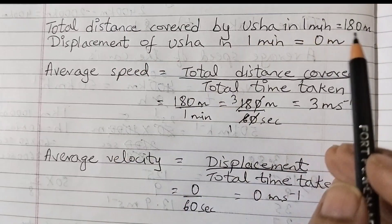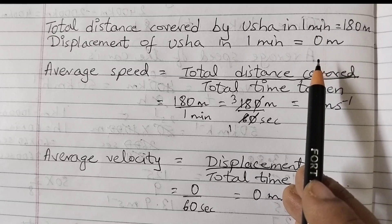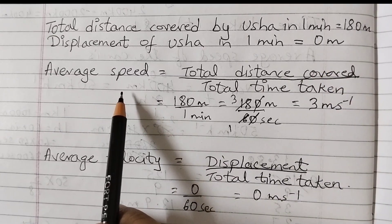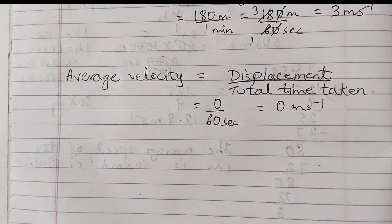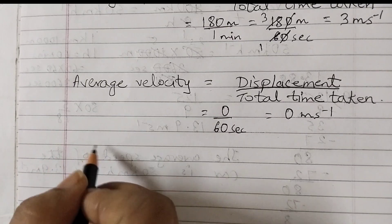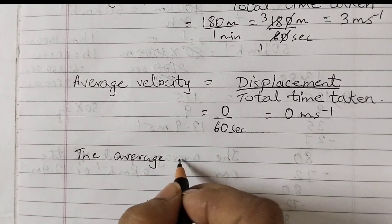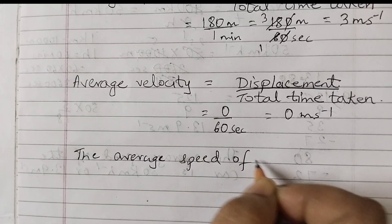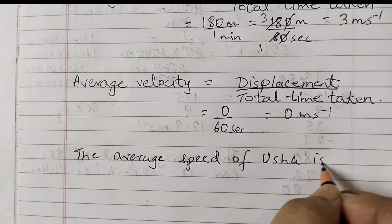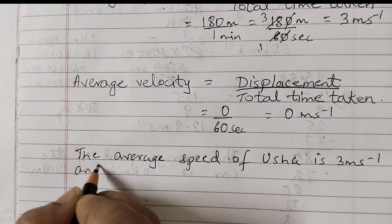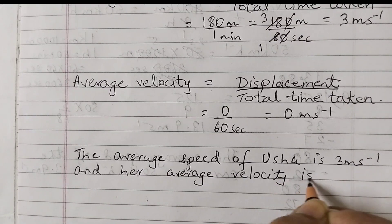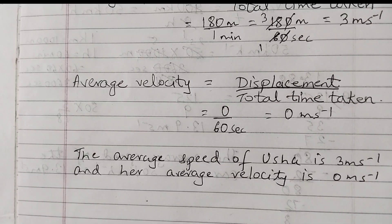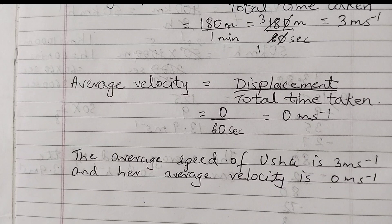One important concept from this problem: distance can never be 0, but displacement can be 0. Similarly, average speed can never be 0, but average velocity can be 0. The final answer: the average speed of Usha is 3 meters per second and her average velocity is 0 meters per second. That was example 7.3. In the next video we shall discuss example 7.4. Thank you.